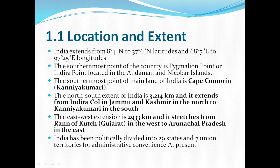The southernmost point of the country is Pygmalion Point, also called Indra Point, which is now submerged and no longer exists. This point was located in the Andaman and Nicobar Islands. The southernmost point of the mainland of India is Cape Comorin, that is Kanyakumari.